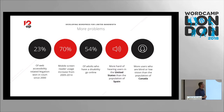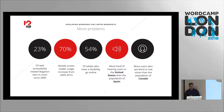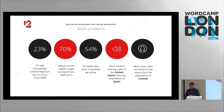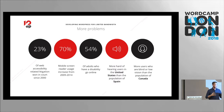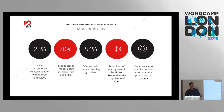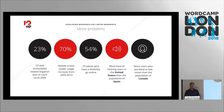A couple more stats to drive the point home. 23% of web accessibility-related litigation was won in court since 2000. In layman's terms, whoever took a website to court since 2000 has had a reasonably good chance of winning. There have been a lot of stories about potential users coming to websites to get information, not being able to get it, and creating lawsuits against those companies. It's quite a scary figure.